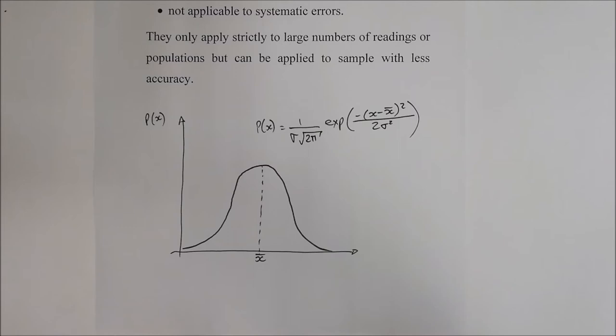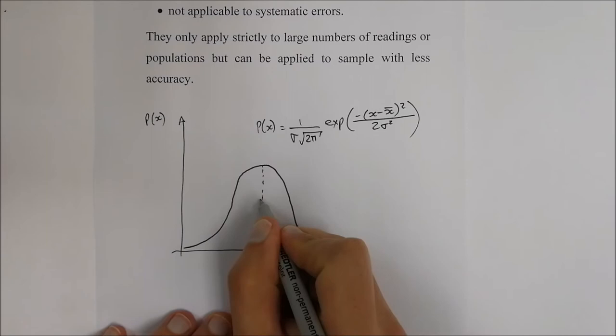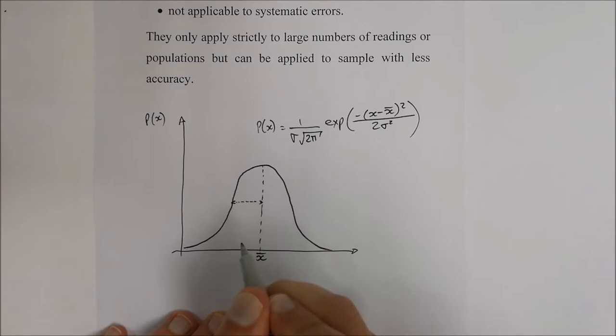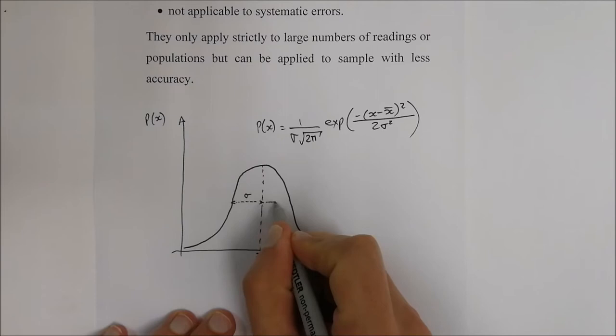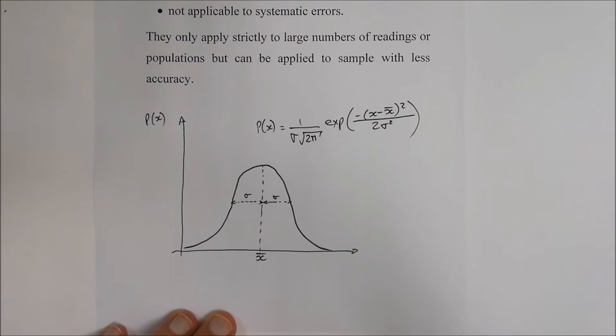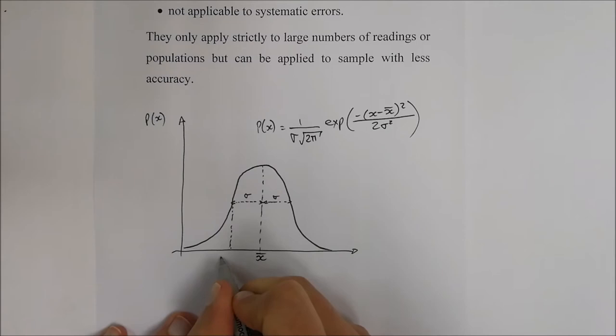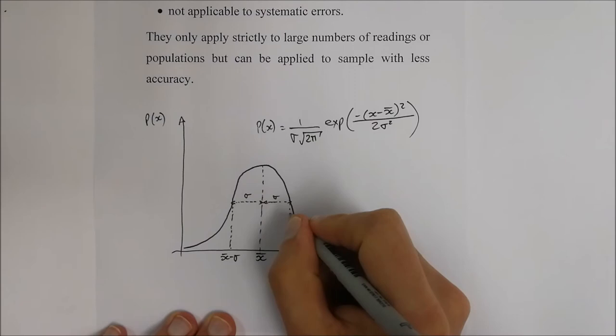We'll look at the equations for mean and standard deviation shortly. About 68% of the area under this graph falls within one standard deviation. That region spans from x̄ minus the standard deviation to x̄ plus the standard deviation — one standard deviation on each side of the mean.